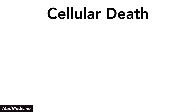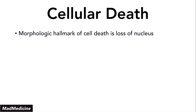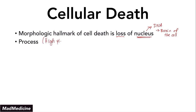The main thing that happens when a cell dies is that you are going to lose the nucleus. The morphologic hallmark of cell death is the loss of the nucleus — this is essentially where all our DNA is stored, the brain of the cell. If the brain of the cell dies, the cell itself is going to die. The process of the loss of the nucleus is very high yield and you need to commit it to memory.